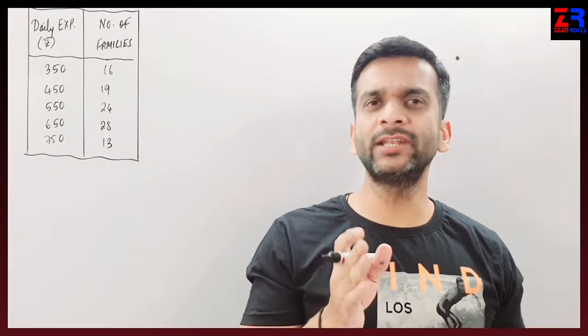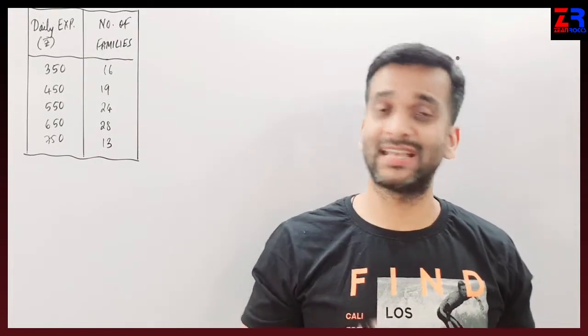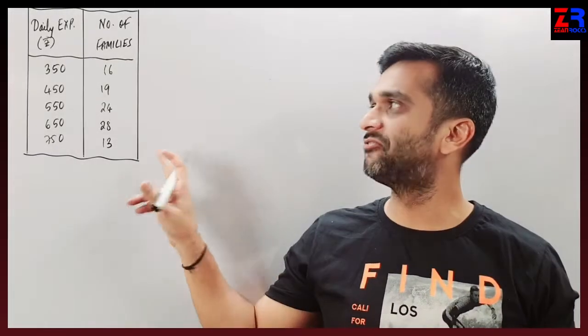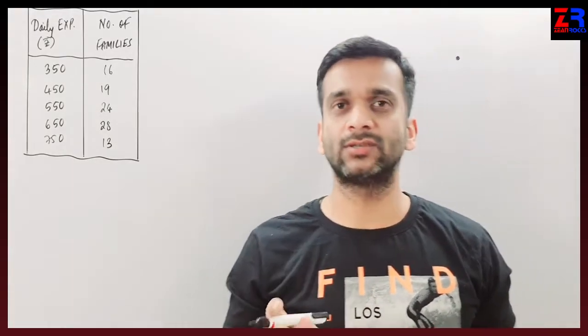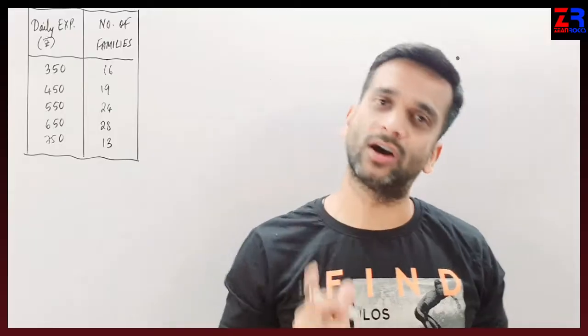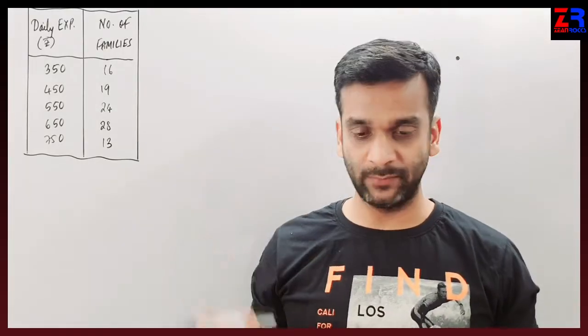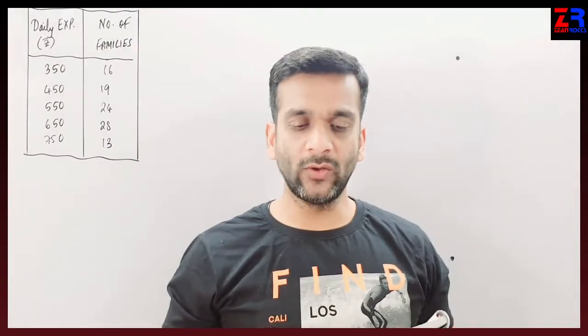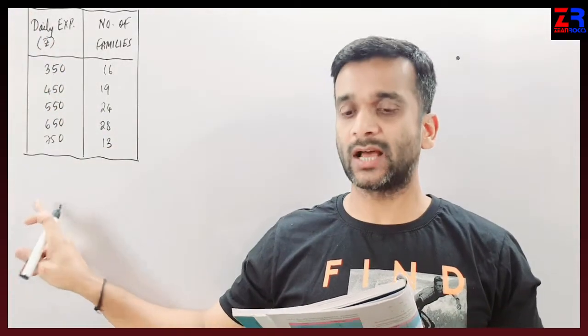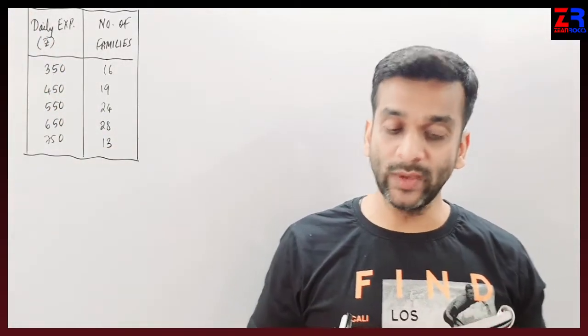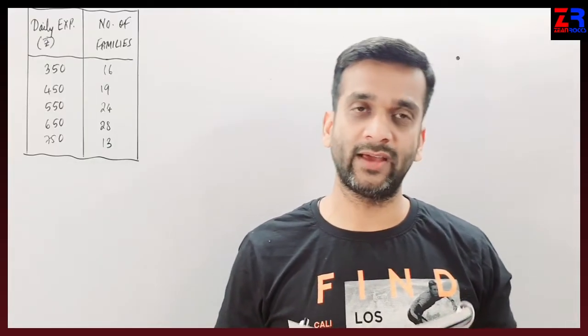Hello students, let's continue with Mathematics 2, Chapter 1, partition values. I am taking sum number 4 of Exercise 1.1. From the following data of daily expenditure of families in rupees, compute the expenditure below which 75% of the families include their expenditure.